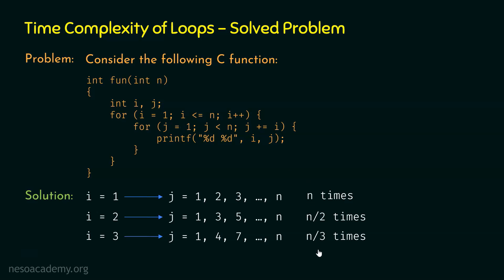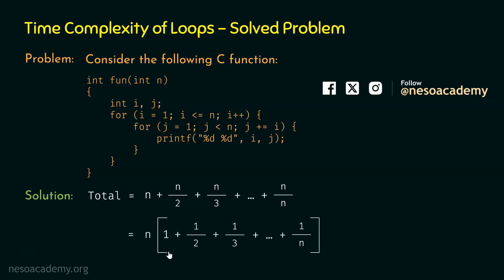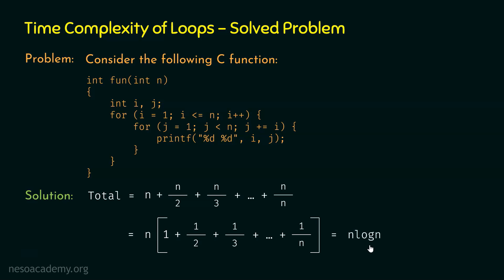Now we need to add all these frequency counts to get the total frequency count of this nested for loop structure. The total frequency count is n + n/2 + n/3 + ... + n/n. Taking n common from the numerators, we get n times (1 + 1/2 + 1/3 + ... + 1/n). This summation equals log n, as discussed in a prior lecture on common logarithms and summations. Therefore the result is n log n.